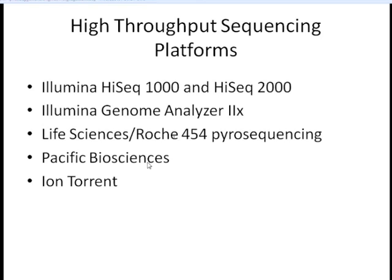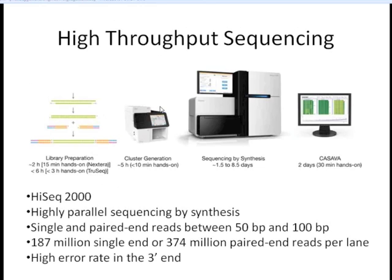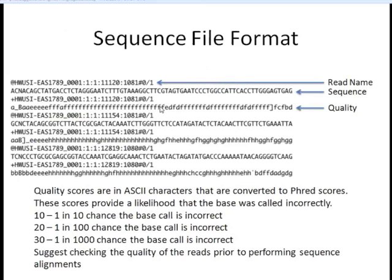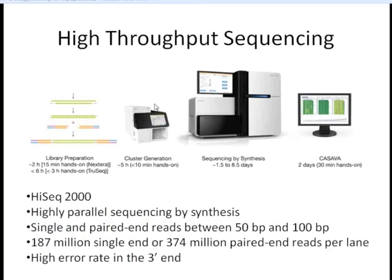Pacific Biosystems is sequencing single molecules, and the Ion Torrent is also sequencing, but as opposed to the rest of these that use fluorescence, the Ion Torrent actually measures based on chemistry — specifically measuring the pH after hydrogen atoms are released. Today's webinar is going to focus on sequence that comes out of Illumina machines: the Genome Analyzer 2 or the HiSeq machines.